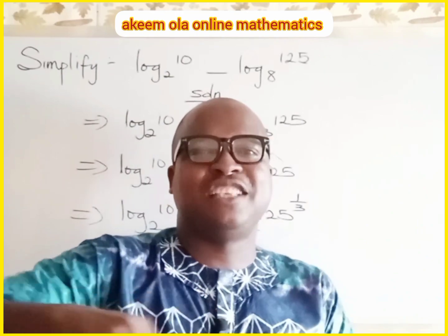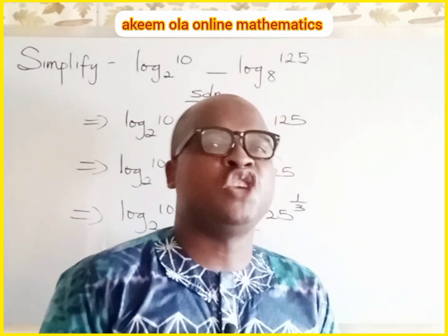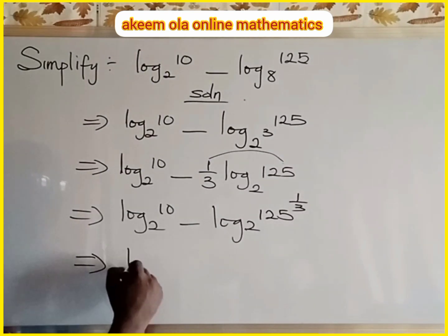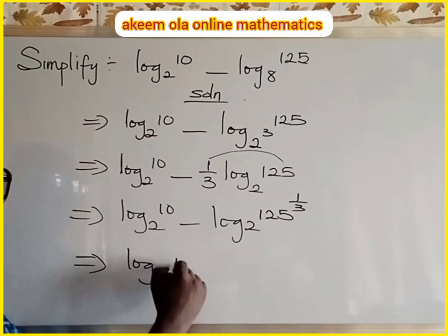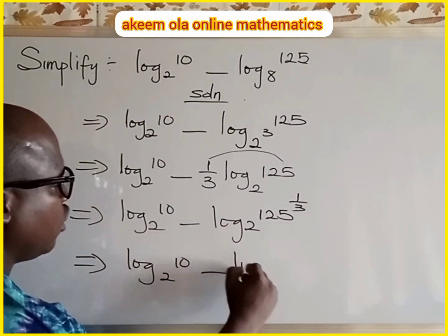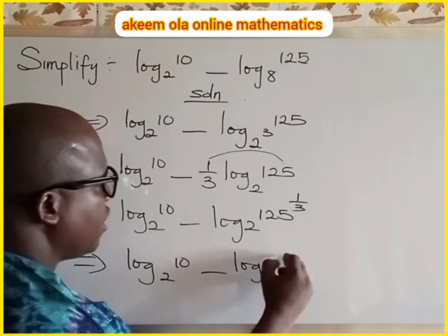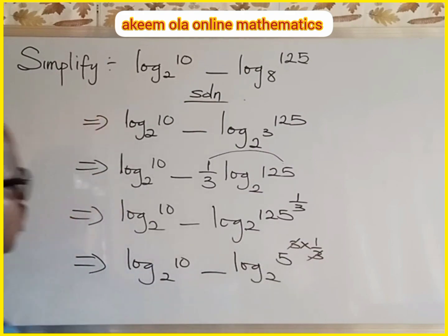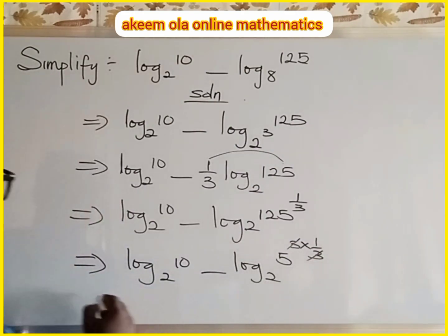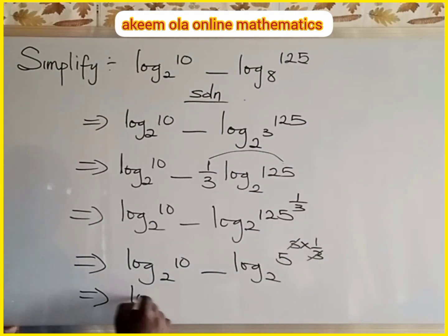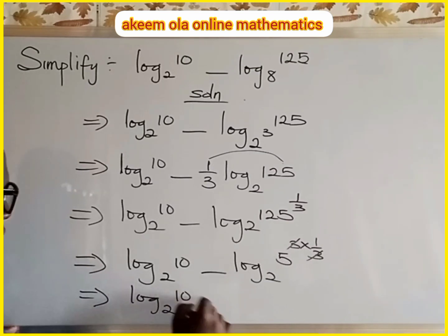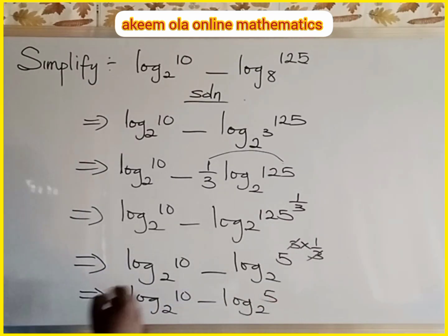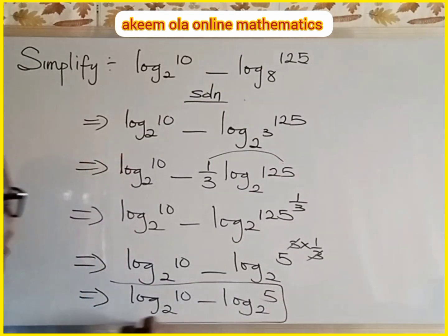Now 125 is five times five times five, which is equivalent to five raised to power three. So here we have log base 2 of 10 minus log base 2 of (5 raised to power 3) times one over three. The powers three and one-over-three cancel each other, so the equation now becomes log base 2 of 10 minus log base 2 of 5.